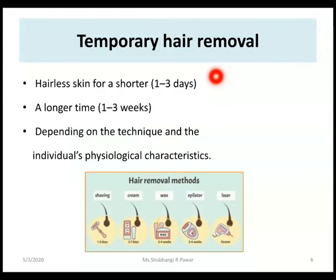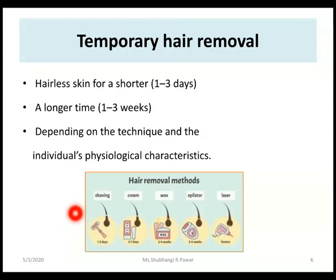Temporary hair removal gives hairless skin for a shorter period of time, about 1 to 3 days, or for a longer period of time, about 1 to 3 weeks. Depending on the technique and the individual's physiological characteristics, these hair removal techniques may differ. In this diagram, you can see that depending on time and technique, you can easily remove hairs.